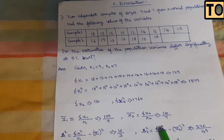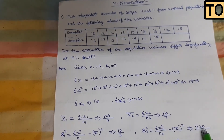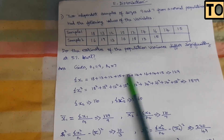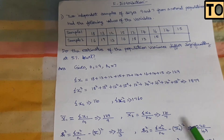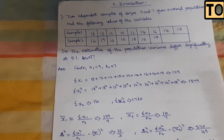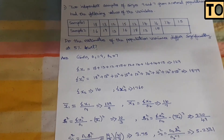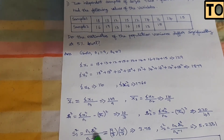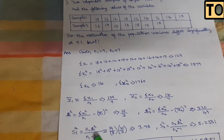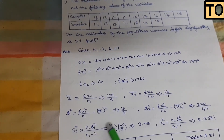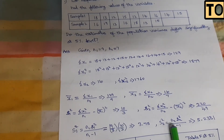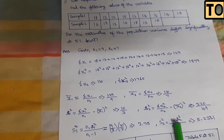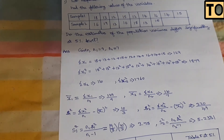That formula gives s1 squared and s2 squared. If you substitute values into capital S1 squared and capital S2 squared: capital S1 squared equals n1 times small s1 squared divided by (n1 minus 1), and S2 squared equals n2 times small s2 squared divided by (n2 minus 1).